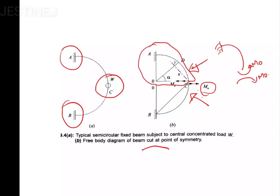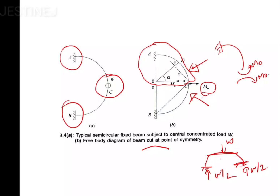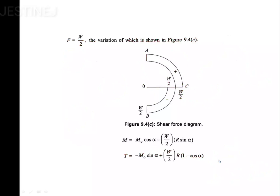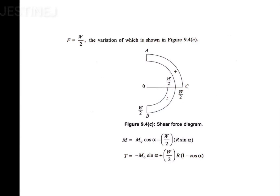M0 is represented with double arrow directions. Regarding the reactions: if a load W is acting and we consider this semicircular frame, it will be W/2 on both sides. You can easily draw the shear force diagram using this W/2 value. The shear force value is W/2, and applying sign conventions, this side is going to be negative.